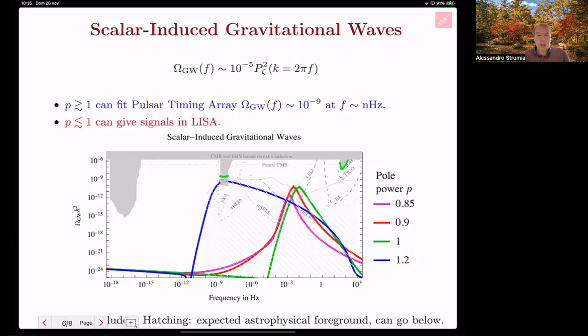In this plot, the gray region is excluded by current bounds. In this plot, the hatched region is the expected astrophysical background. The level is significant, but it's reasonably possible that future experiments will go somehow below.